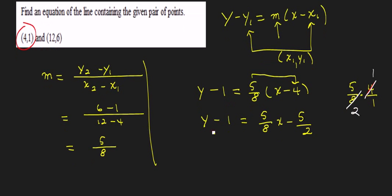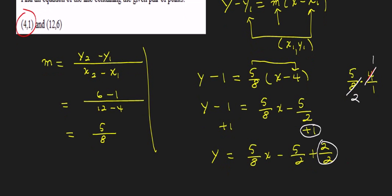Now we need to add 1 to both sides to get y by itself. So we have y is equal to 5 eighths x minus 5 halves plus 1. Well, let's say plus 2 over 2 because, remember, we're going to add 1 to a fraction. We want to make that look like a fraction, and we need a common denominator. So 5 halves plus 2 over 2 is the same as 5 halves plus 1.